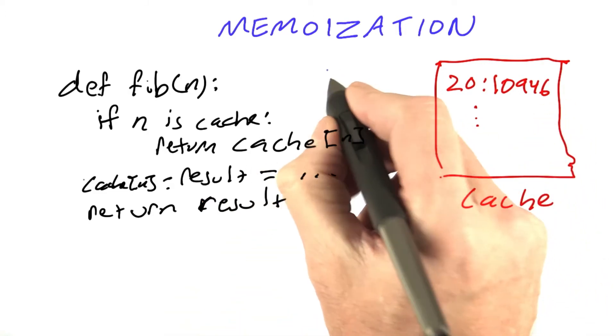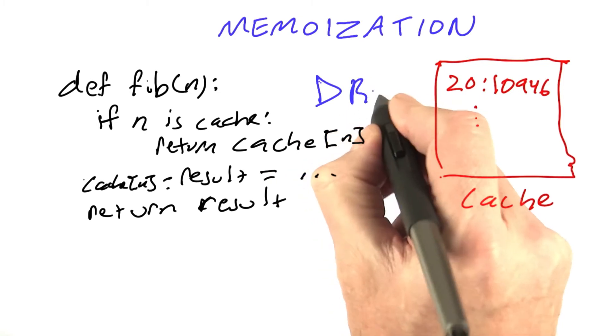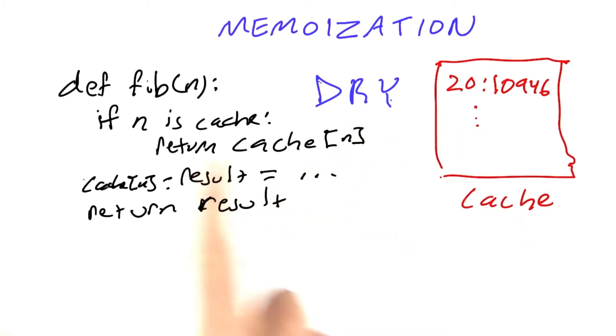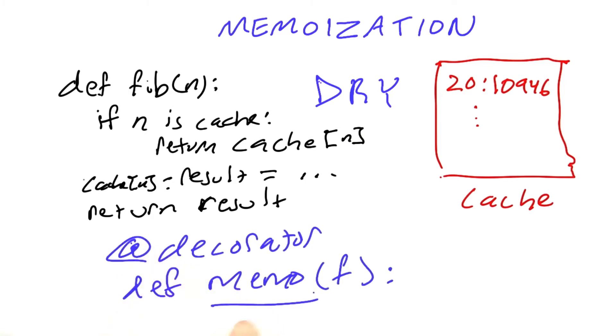We've done this once, and that's fine, but I'm worrying about the principle of don't repeat yourself. There's probably going to be lots of functions in which I want to store intermediate results in a cache, and I don't want to have to repeat this code all the time. This is a great idea for a decorator. We can define a decorator called memo, which will go ahead and do this cache management, and we can apply it to any function.